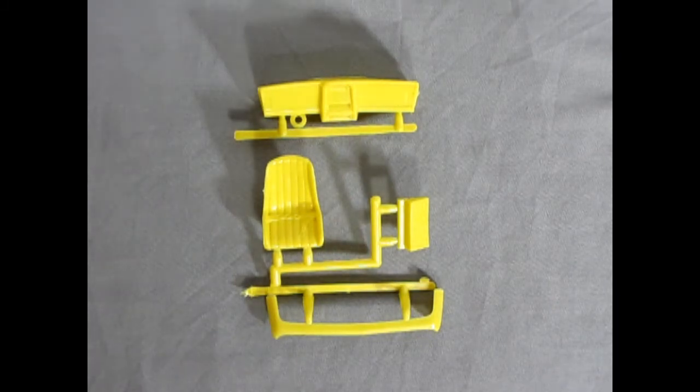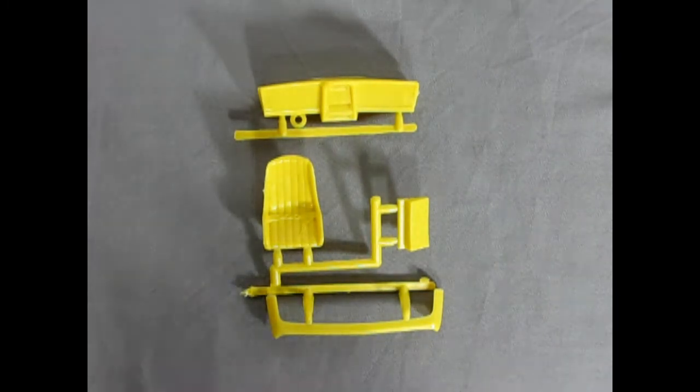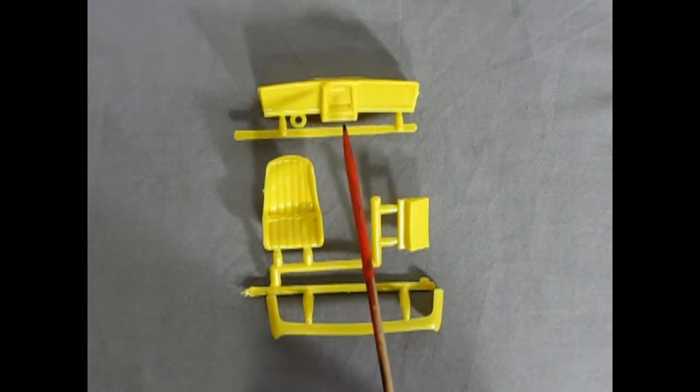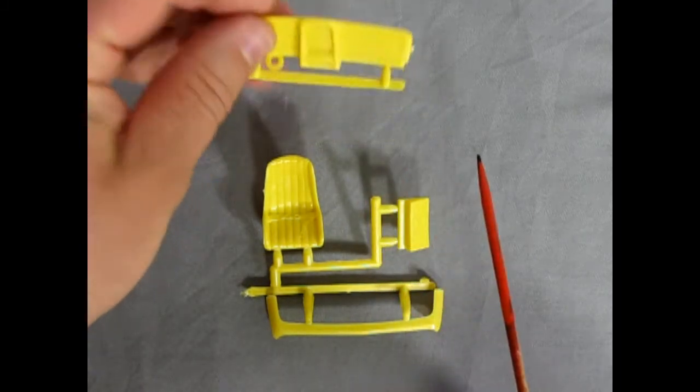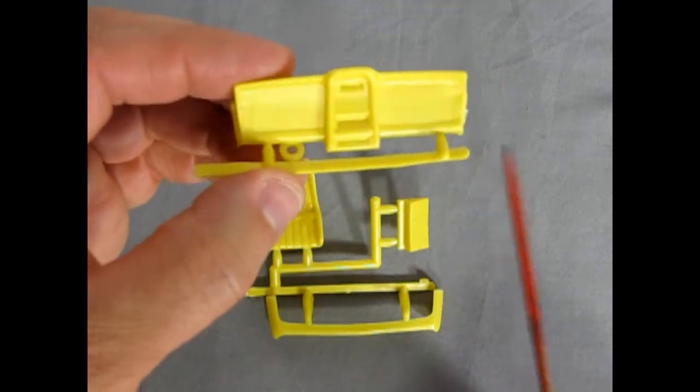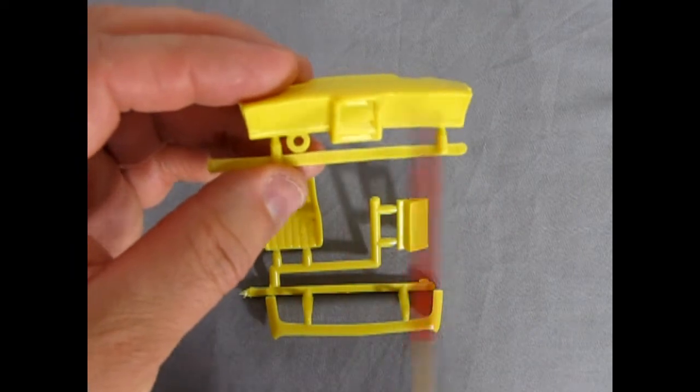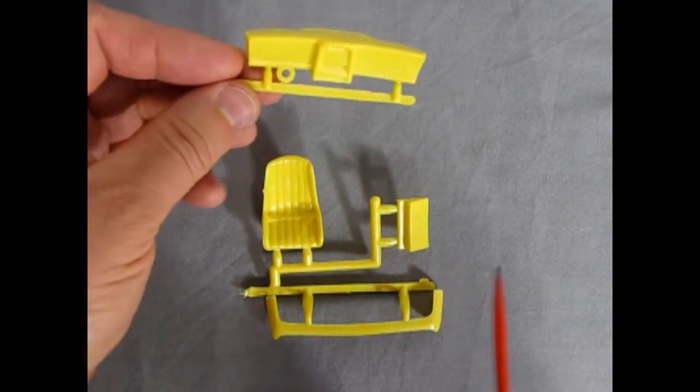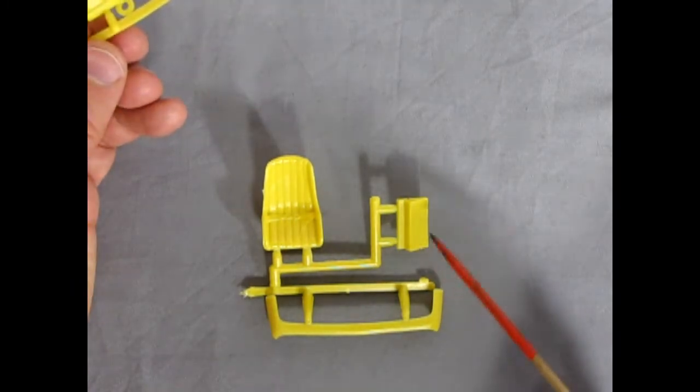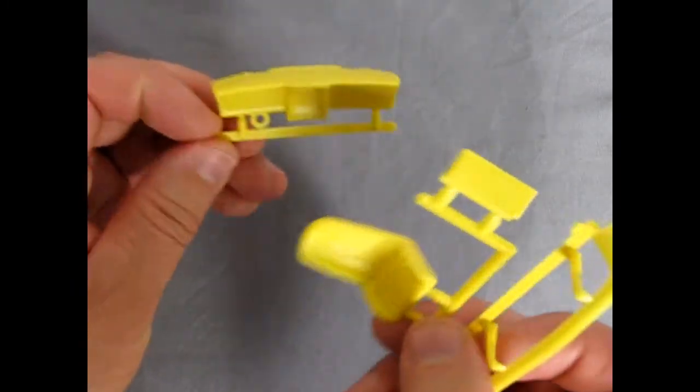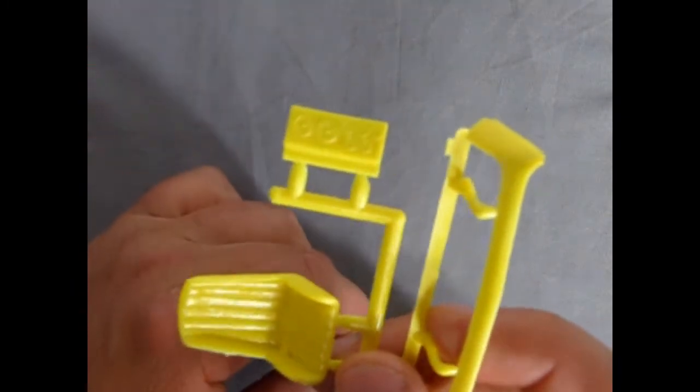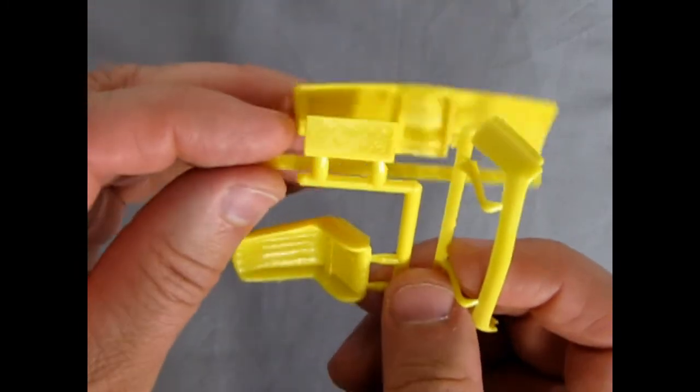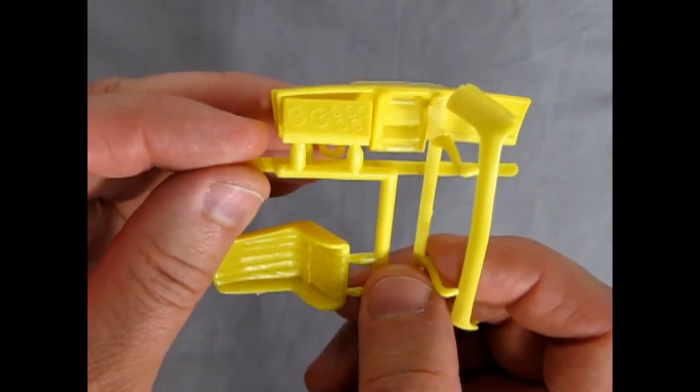I thought I would show these components together because they go together. This is our dashboard and as you can see it is really smoothed out. There's no instruments over here at all and this is all very flat. Again, ideal for Trans Am racing. This piece here is actually the instrument panel. If we bring it up close you can see the gauges in there and that would just glue right in like that.